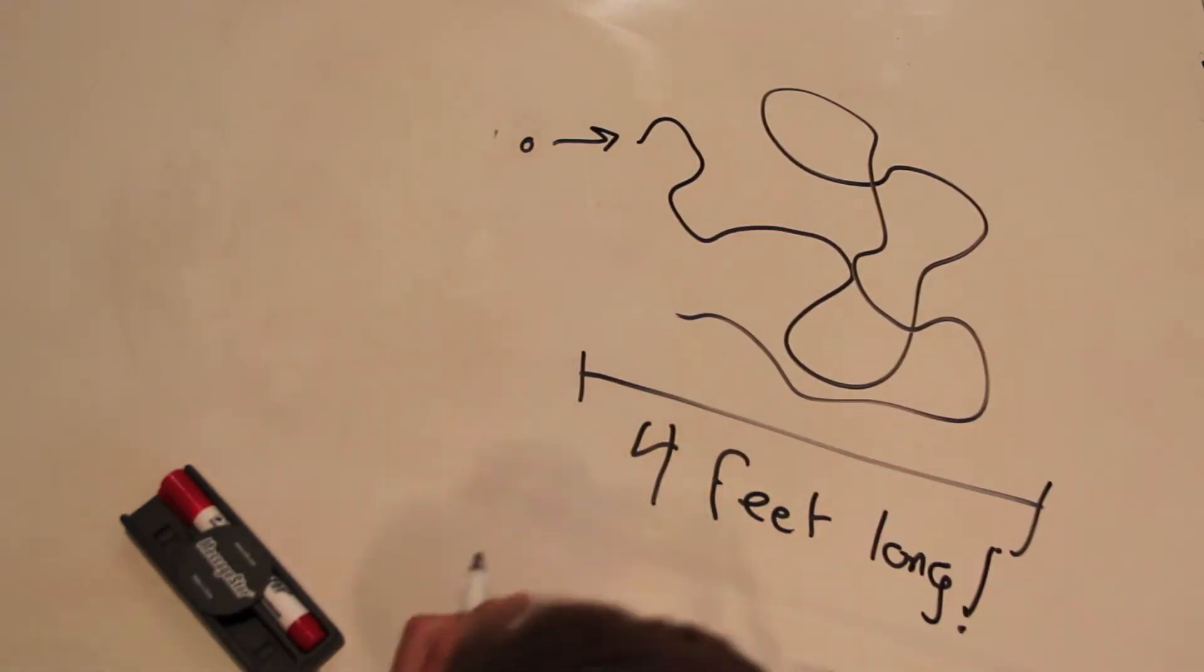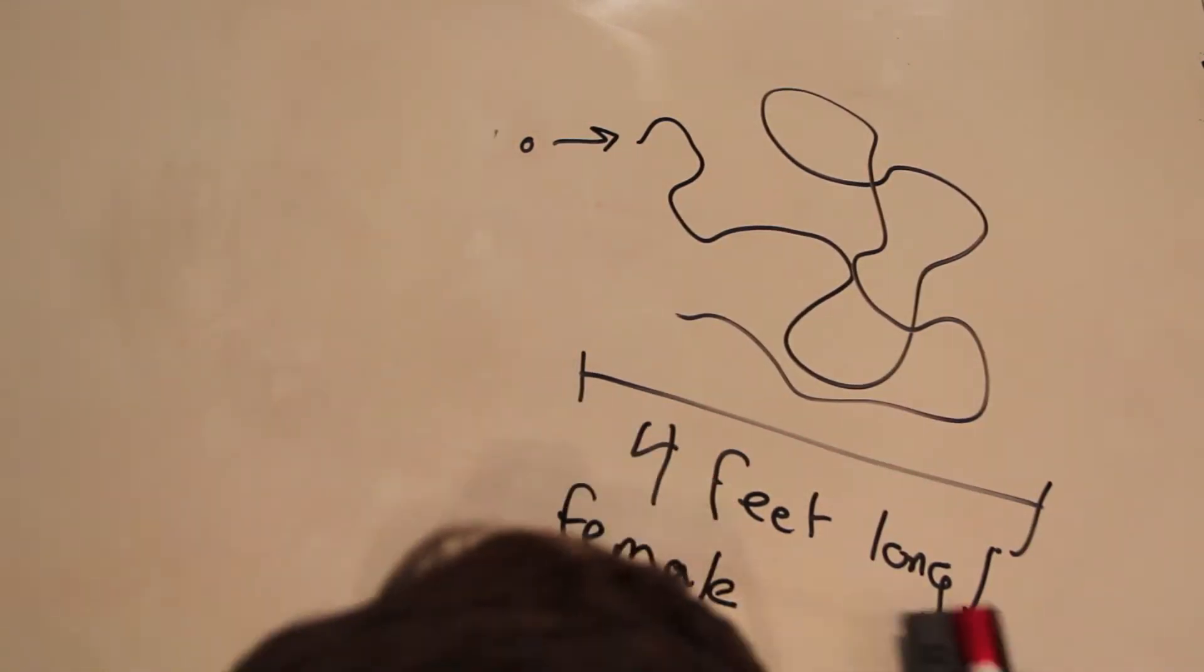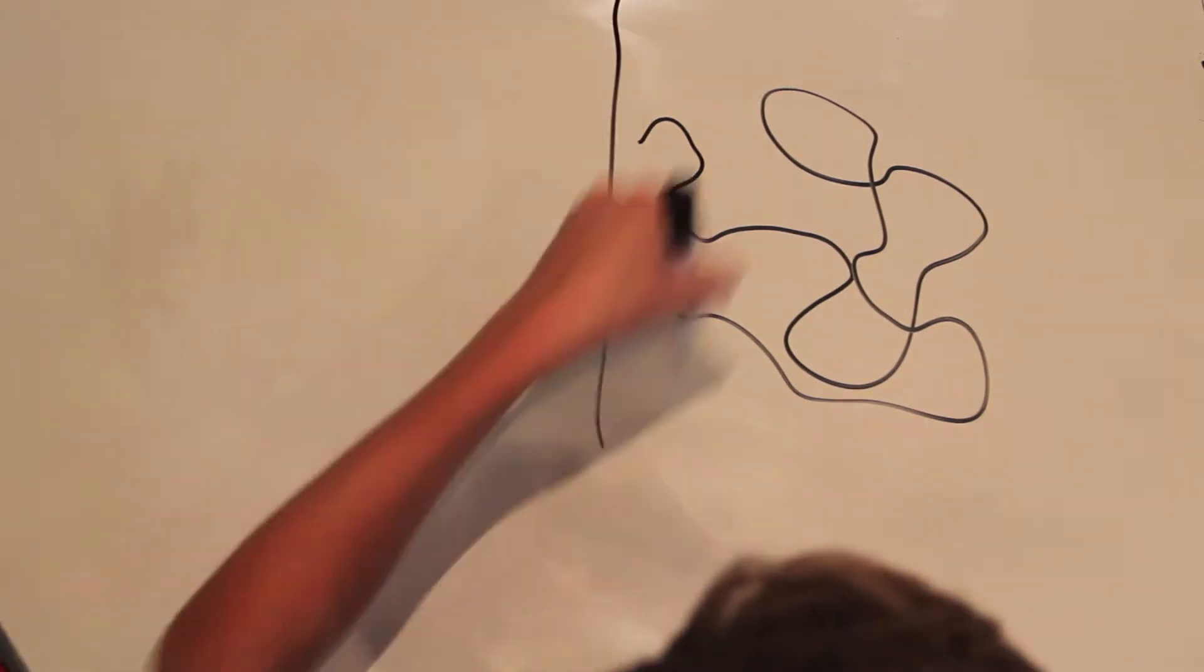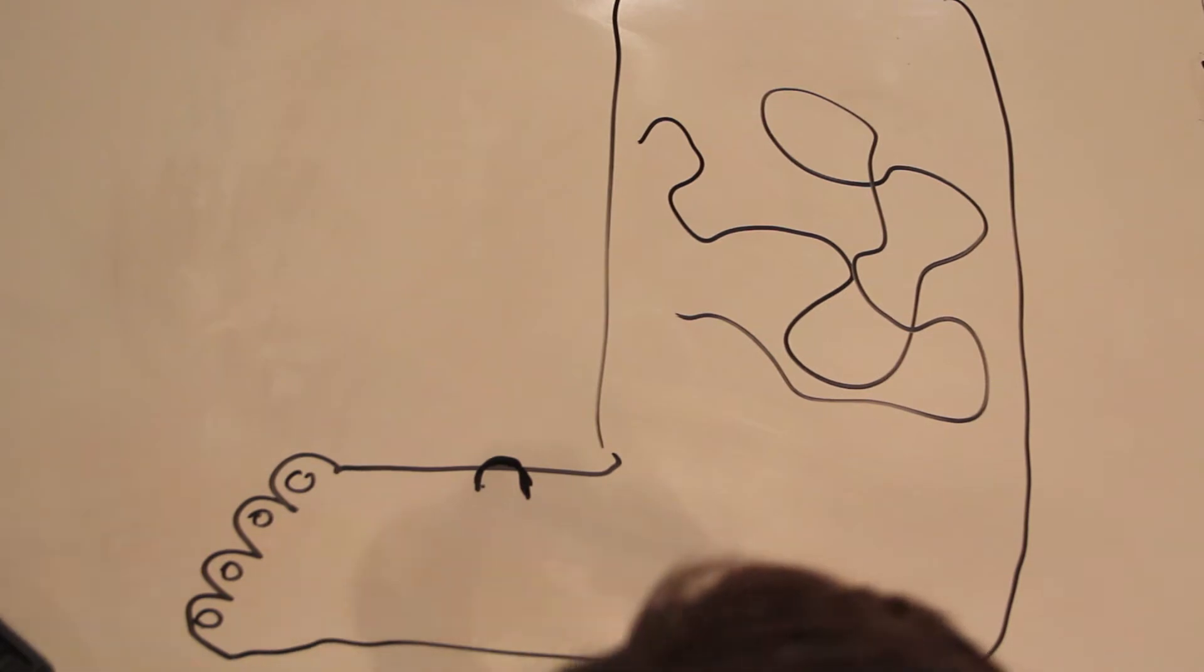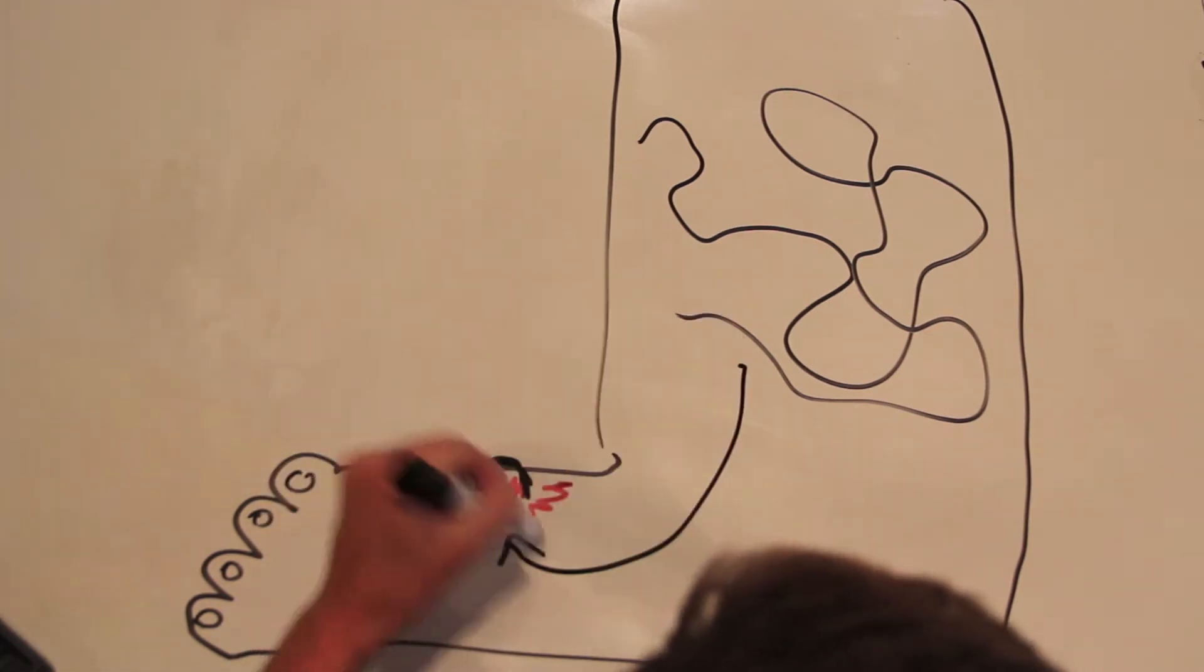So in about a time frame of a year, this worm grows up to four feet long. And it seems really long, but it's true. So after that year, the worm decides it's time to leave the body through red boils in your foot. That's really nasty.